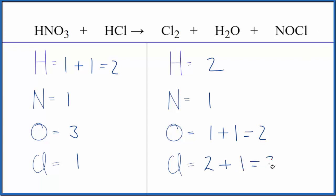Might as well try to balance the chlorines first. If we put a three here we'll have 1 times 3, that'll give us three chlorine atoms. Those are balanced.